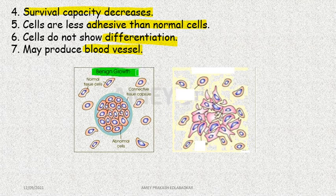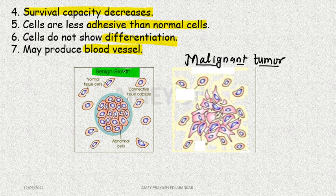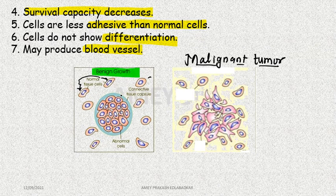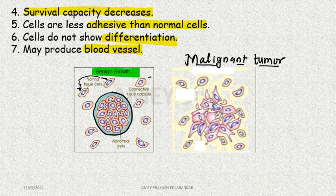The tumor that develops is of two types: benign tumor and malignant tumor. In a benign or non-malignant tumor, all the abnormal cells are covered with a particular sheath and the whole part remains restricted and localized to one particular site. It does not spread, but that does not mean it causes no trouble.